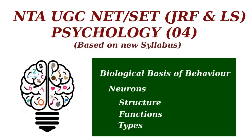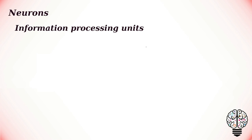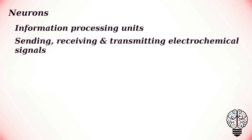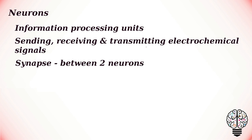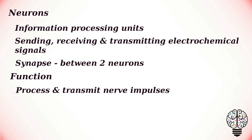Welcome to the psychology series. In this video we are going to talk about neurons — their structure, function, and types. Neurons are the information processing units of the brain, responsible for sending, receiving, and transmitting electrochemical signals throughout the body. Neurons are also known as nerve cells; they are essentially the cells that make up the brain and the nervous system. Neurons do not touch each other, but where one neuron comes close to another, a synapse is formed between the two.